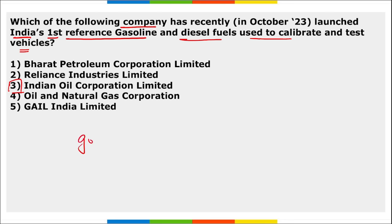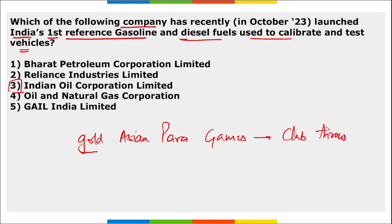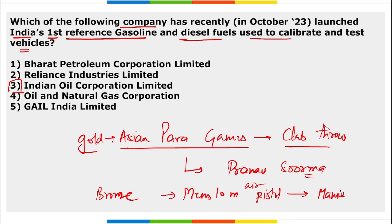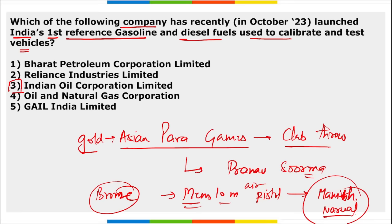Who won gold at the Asian Para Games in Club Throw? Gold was won by Pranav Surma. And who won bronze in the Asian Para Games in the men's 10-metre air pistol? It is Manish Narwal, who recently won bronze in men's 10-metre air pistol.